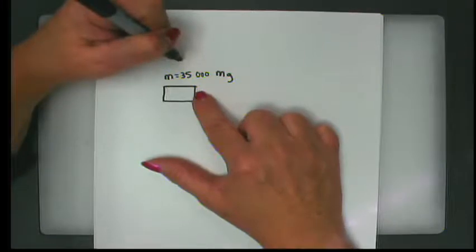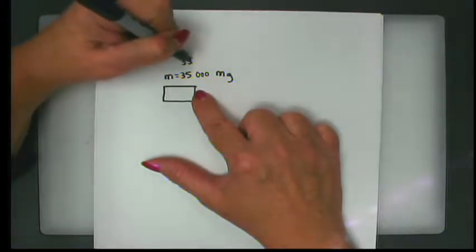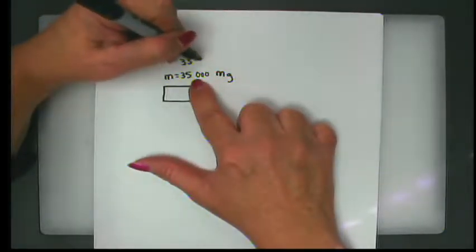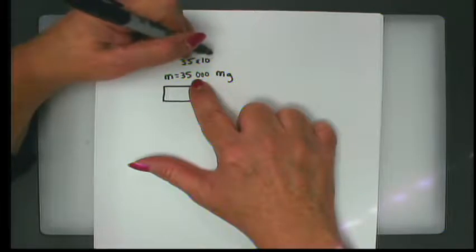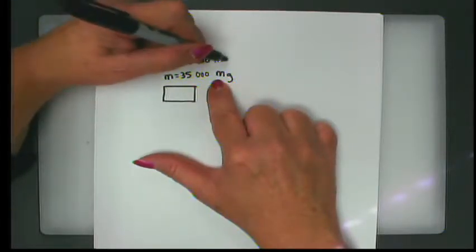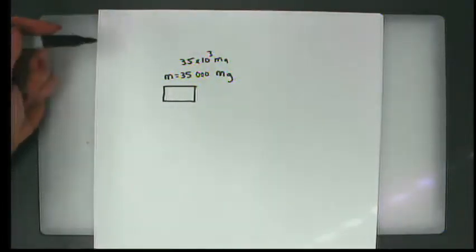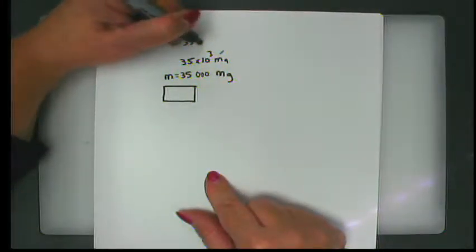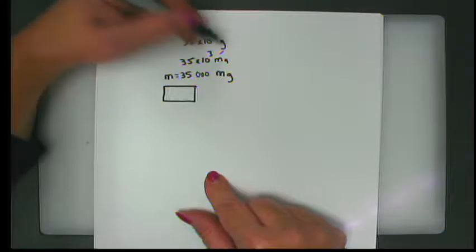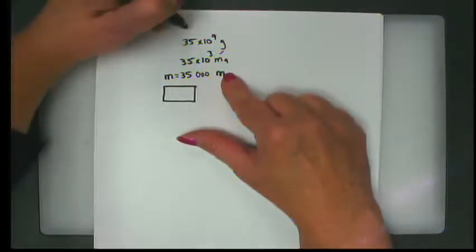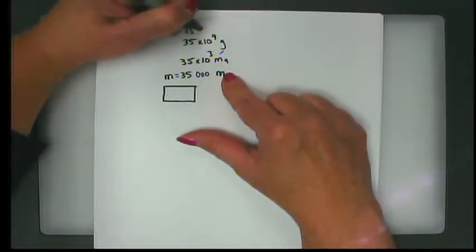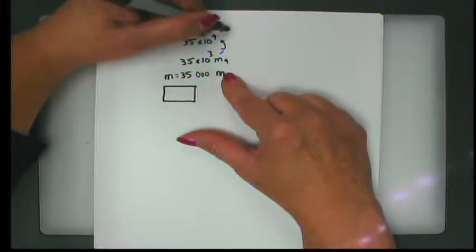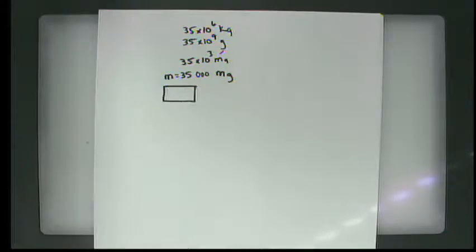35,000 megagrams — mega is 10 to the 6, so this is 35 times 10 to the 9th grams. If we want to report it in kilograms it would be 35 times 10 to the 6 kilograms. All of those are valid units.